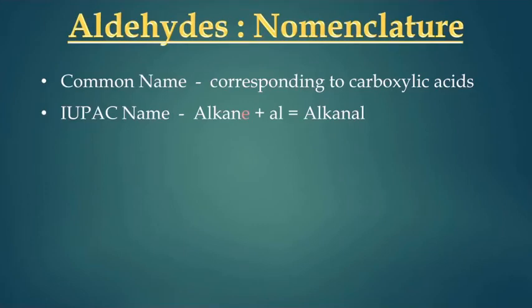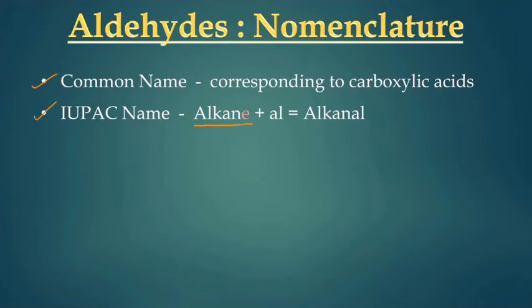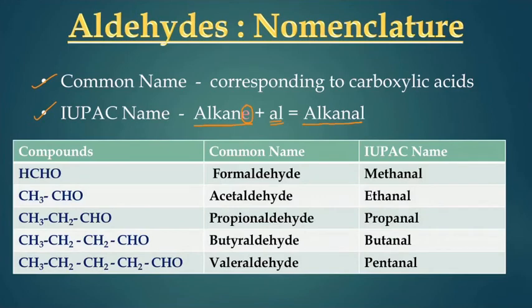First we will start with aldehydes. There are two systems: one is the common nomenclature system and another is the IUPAC nomenclature system. In the IUPAC system, to write the name of an aldehyde, we write the name of the alkane according to the number of carbons, then replace the letter 'e' of the alkane with the suffix 'al'. So the IUPAC name of the compound becomes 'alkanal'.